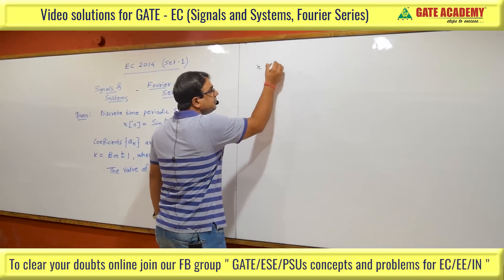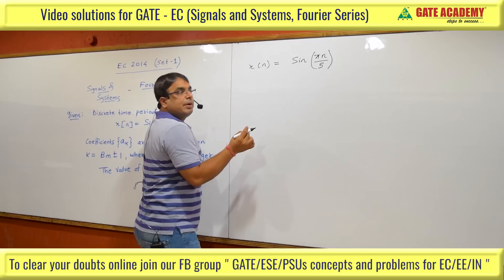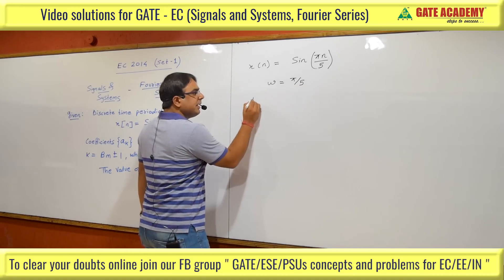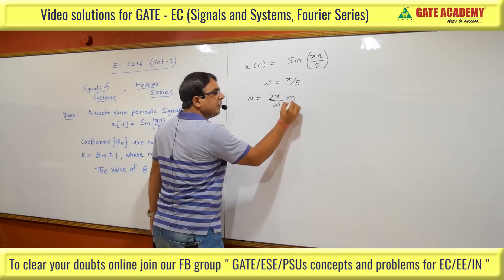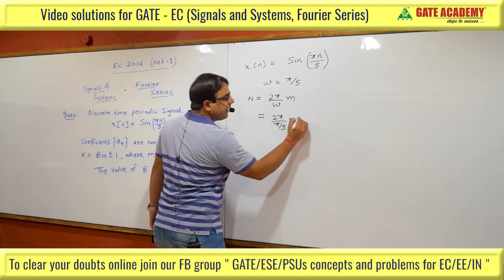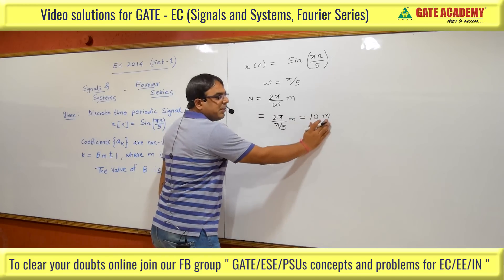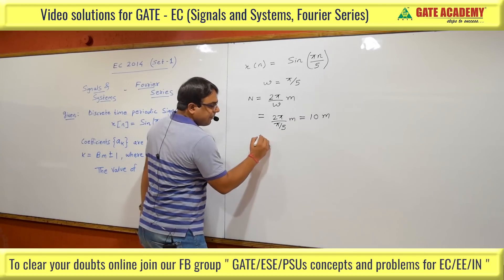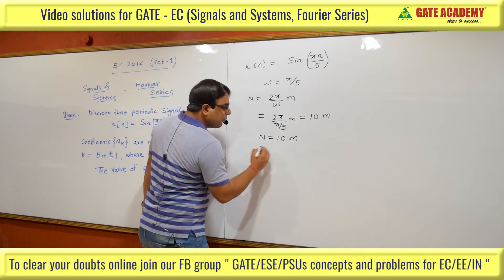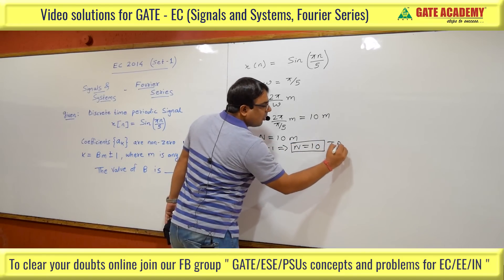x[n] = sin(πn/5). Comparing with the general form sin(ωn), omega for this signal is equal to π/5. For a discrete signal, the time period is N = (2π/ω) × m. Substituting omega = π/5, we get N = (2π)/(π/5) × m = 10m. Since this is a discrete signal, the time period must be an integer, so we use m to convert N to an integer. Setting m = 1 gives N = 10, which is the time period of x[n].